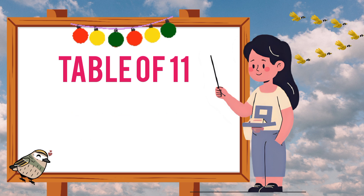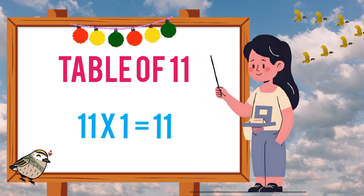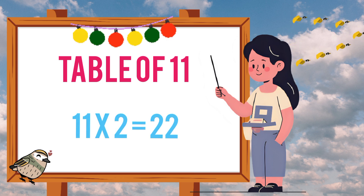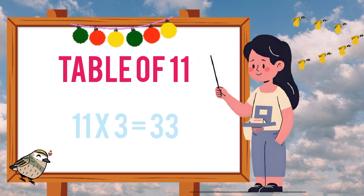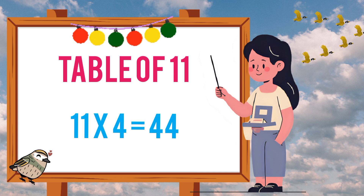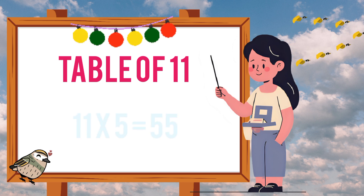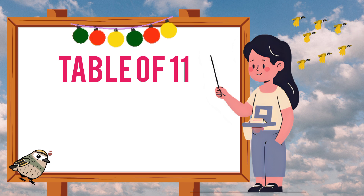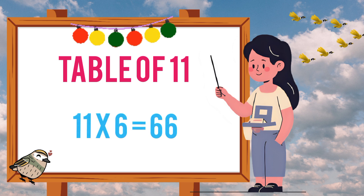Let's do it again. Eleven ones are eleven. Eleven twos are twenty-two. Eleven threes are thirty-three. Eleven fours are forty-four. Eleven fives are fifty-five. Eleven sixes are sixty-six.